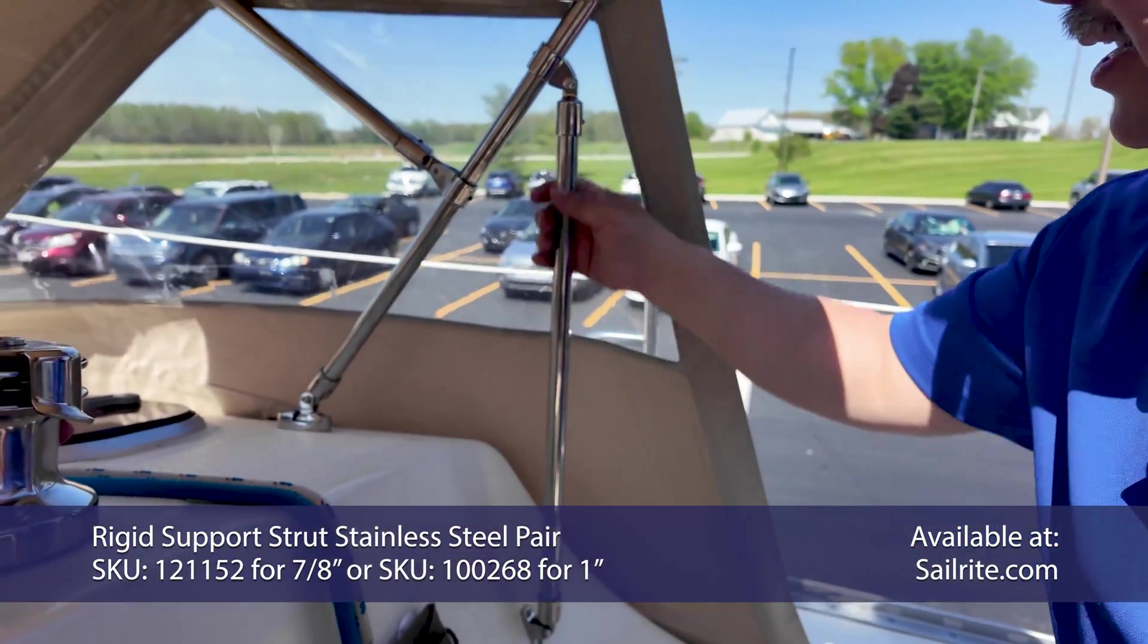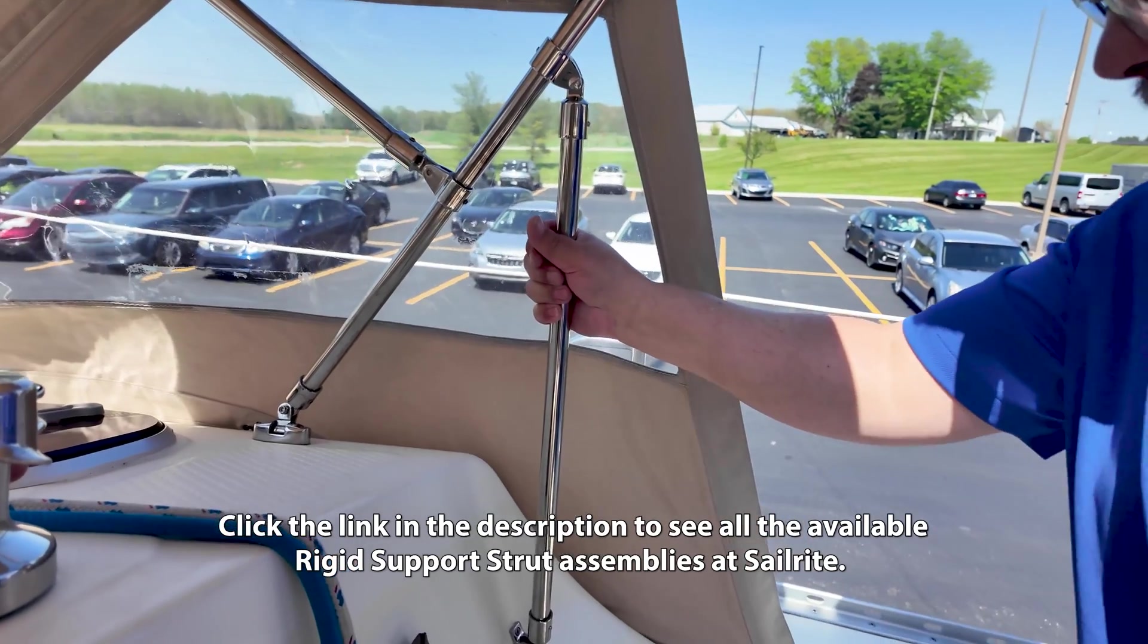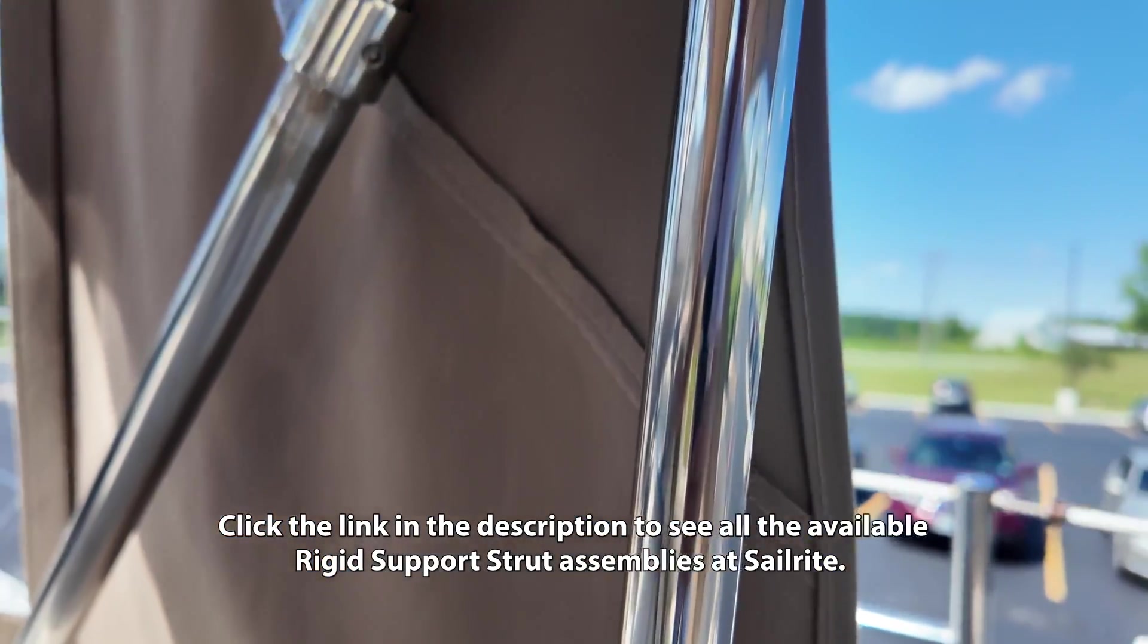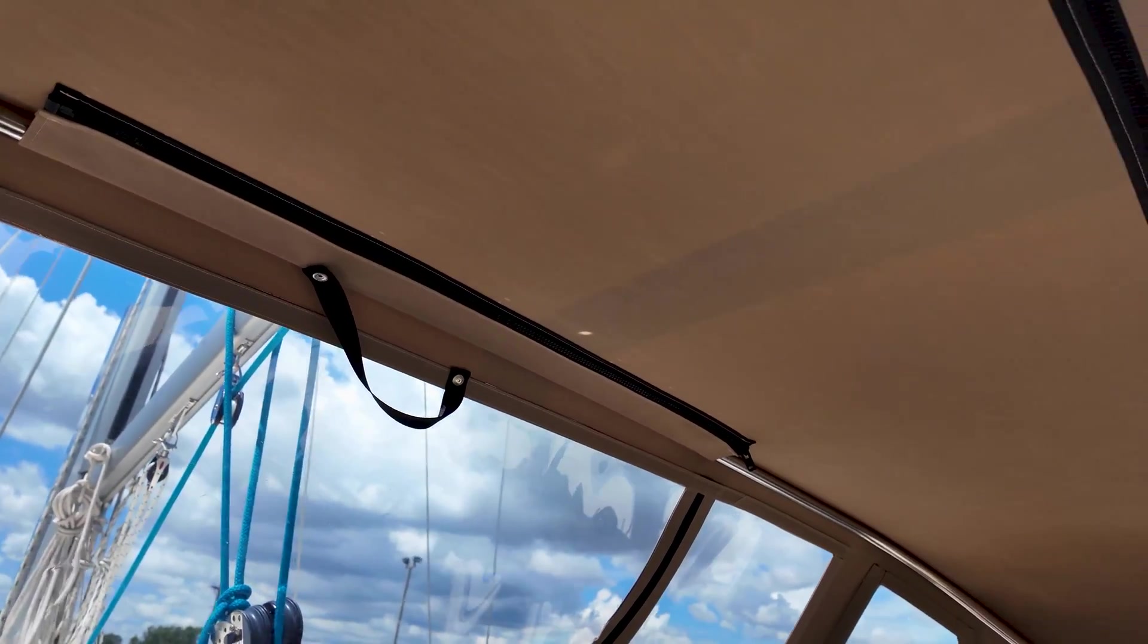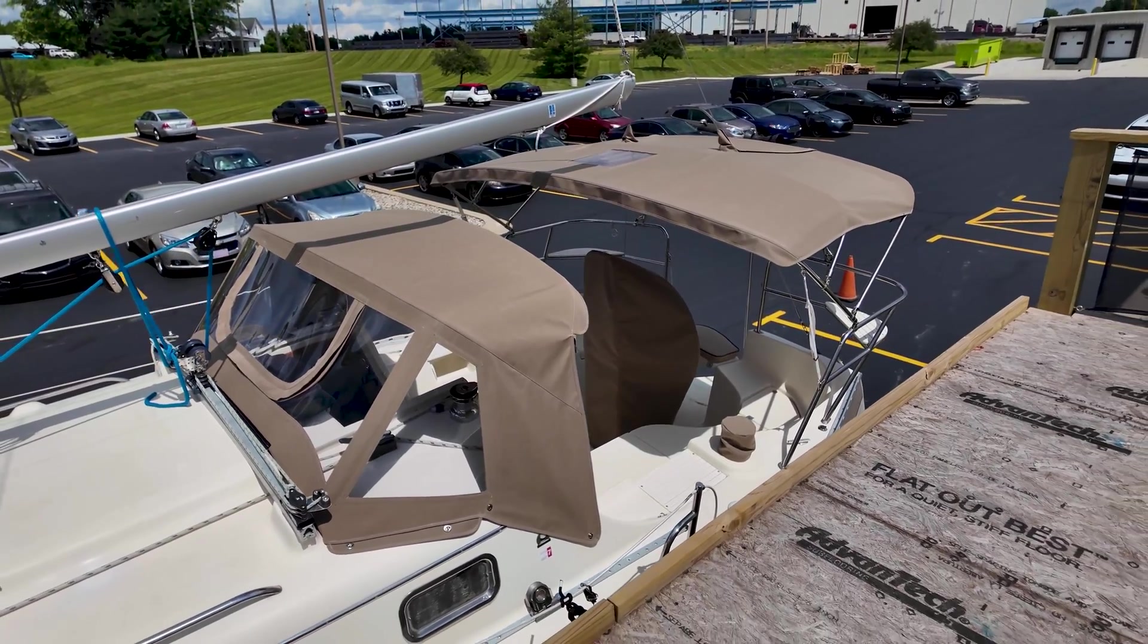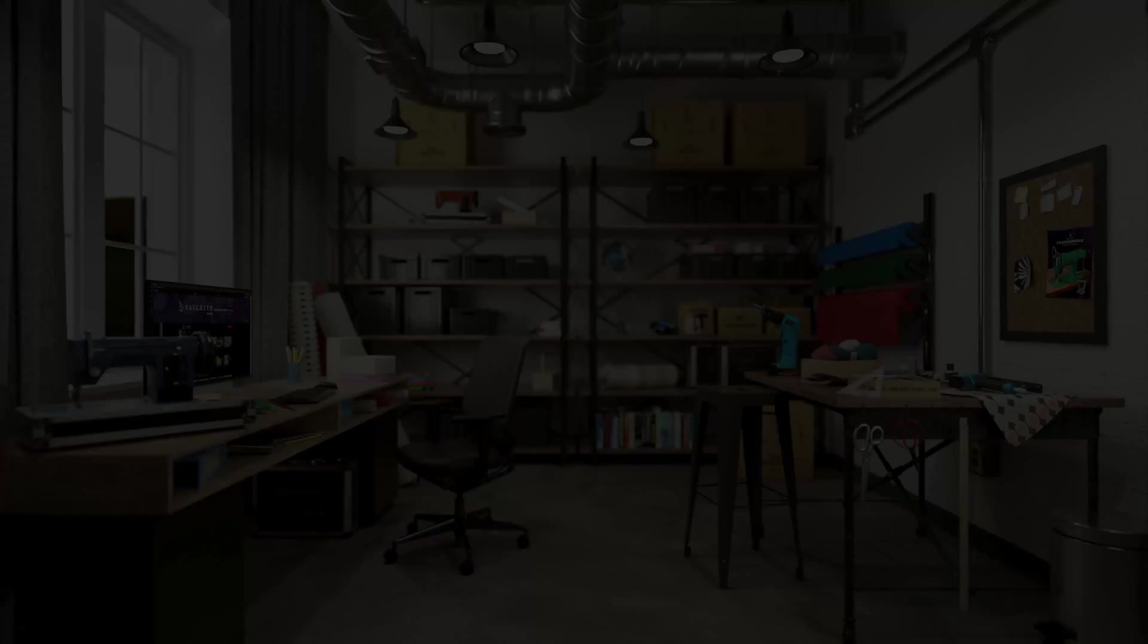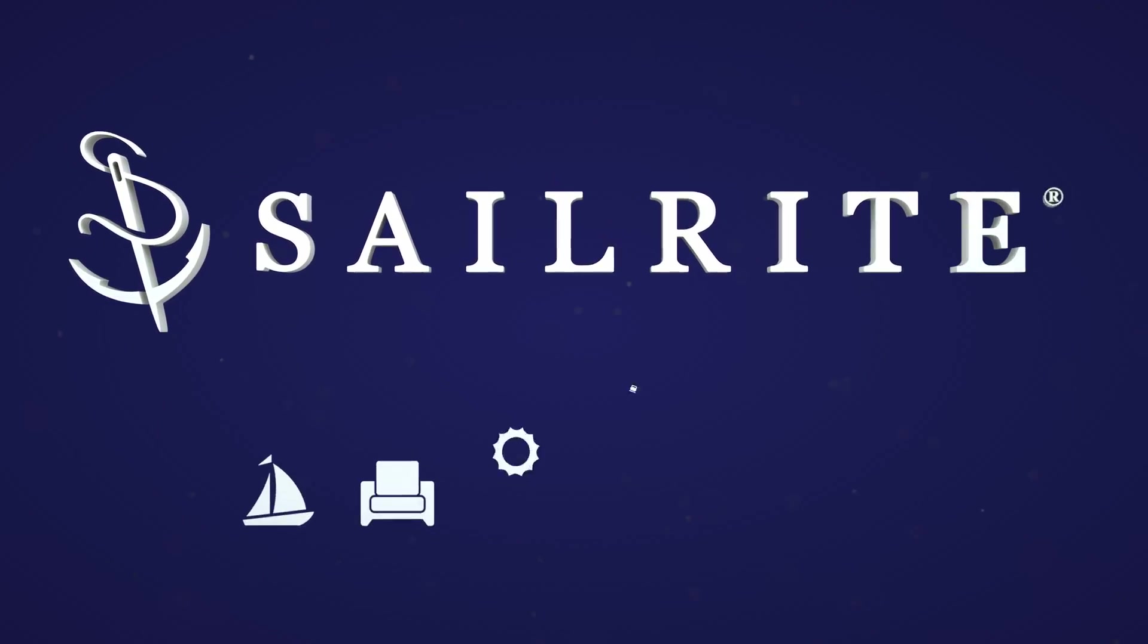So each rigid support kit comes with two of these systems, so you can do it on the starboard and port side. The rigid support strut on the starboard side is now installed. We just need to install the next one that comes in the kit on the port side. Then we can remove the old dodger and pattern for this new dodger, which looks great. See a tutorial video on how to build that dodger in the description below or the bimini behind it. Also in that description below, you'll find the tools list and the materials that we use to install this rigid support strut. I'm Eric Grant and from all of us here at Sailrite, thanks for watching.